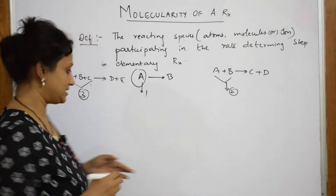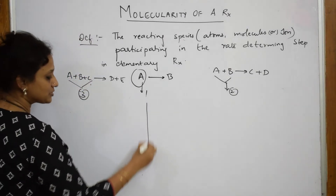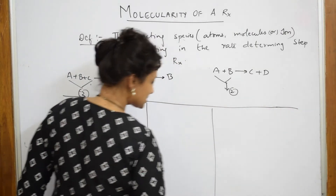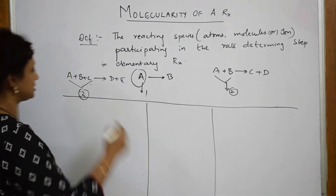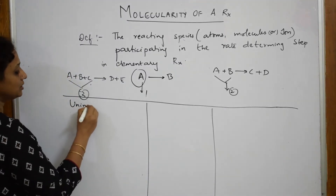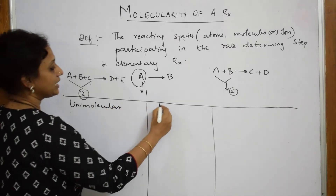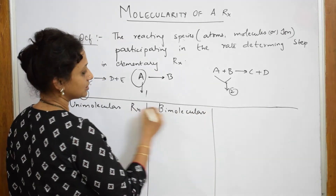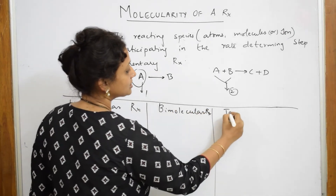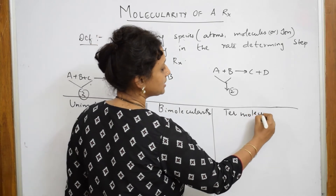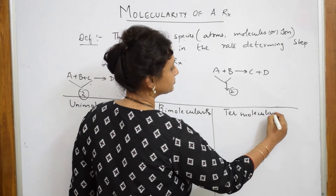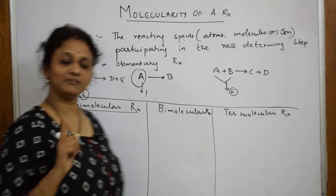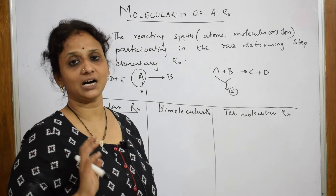Based on the molecularity, you have three types of reactions. Let us make a table. The first type is called unimolecular reactions, the second is bimolecular reactions, and the third is tri or termolecular reactions — both terms are the same, don't get confused. In unimolecular reactions, there is only one reactant participating in the RDS, that is, the rate determining step.